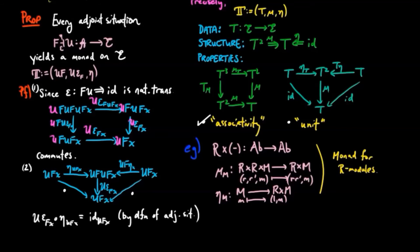For the right hand side, we have U epsilon FX precomposed by UF eta X. And we can take out that U since U preserves composition. And then on the inside of these parentheses, we see that we have the other triangle identity on the object FX. So we have U of epsilon FX precomposed by F eta X equals U identity FX.